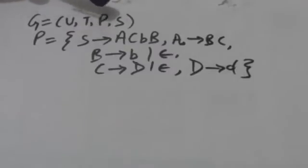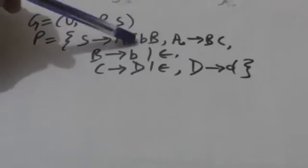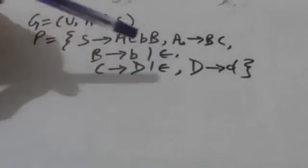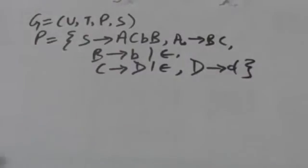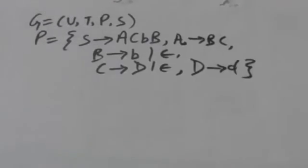Now suppose there is a grammar G defined by the quadruple V, T, P, S — where V is the set of variables, T is the set of terminals, P is the set of productions, and S is the start symbol. Set P has the following productions: S → ACBB, A → BC, B → B, B → empty string, C → DC, C → empty string, D → D.